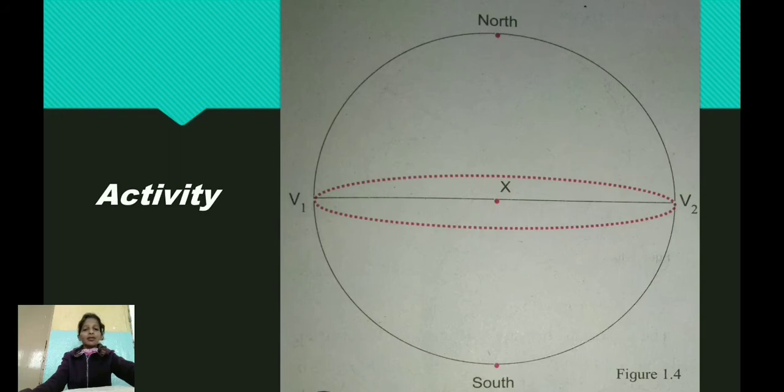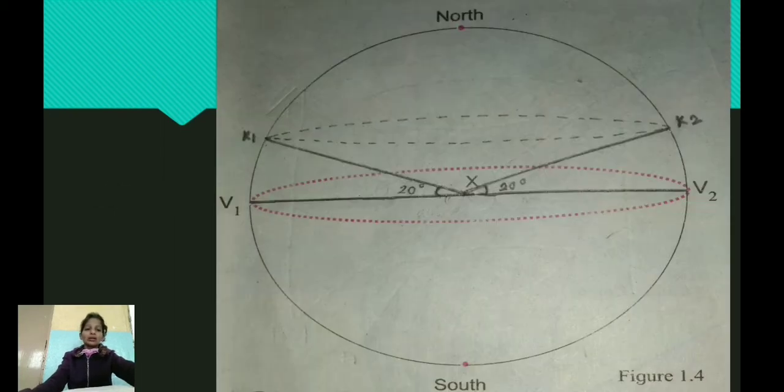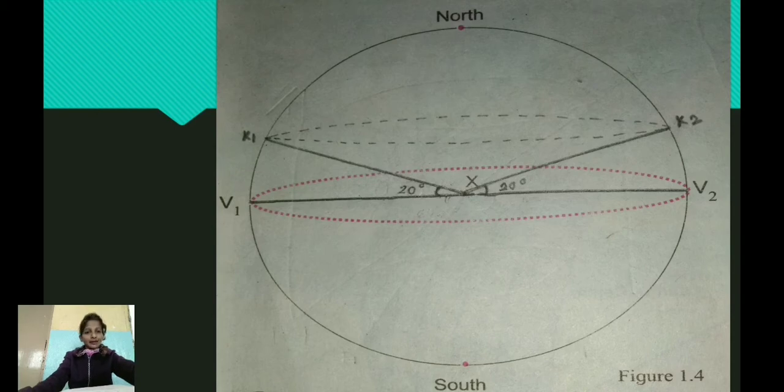Let us see the activity given on page number 2 and 3 in your textbook. You can see an image on your screen. In the upper portion of the circle at the center x, we are supposed to draw angles of 20 degrees, V1 x k1 and V2 x k2, with k1 and k2 being the points on the circle. Now we will draw an ellipse joining k1 and k2.